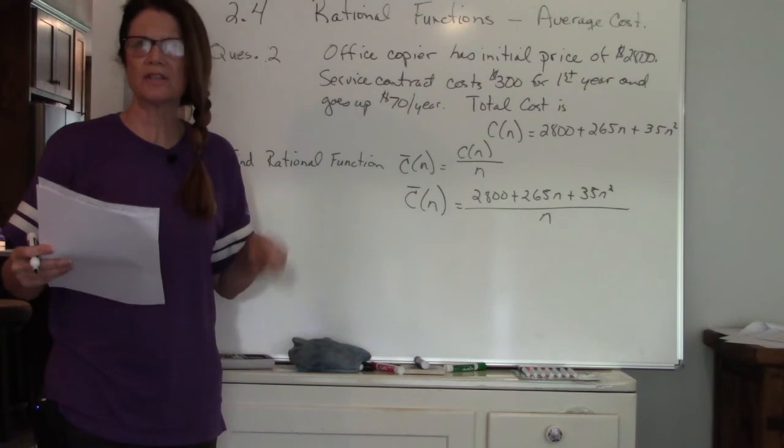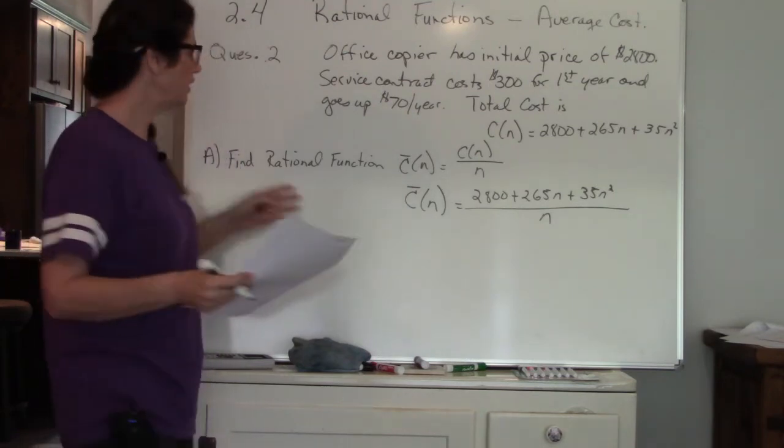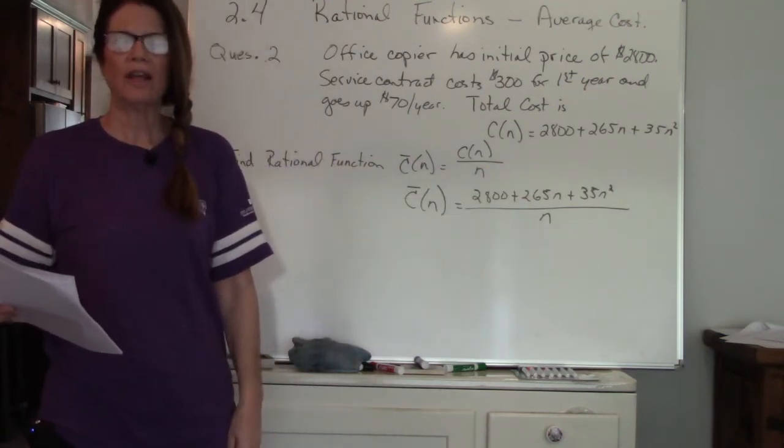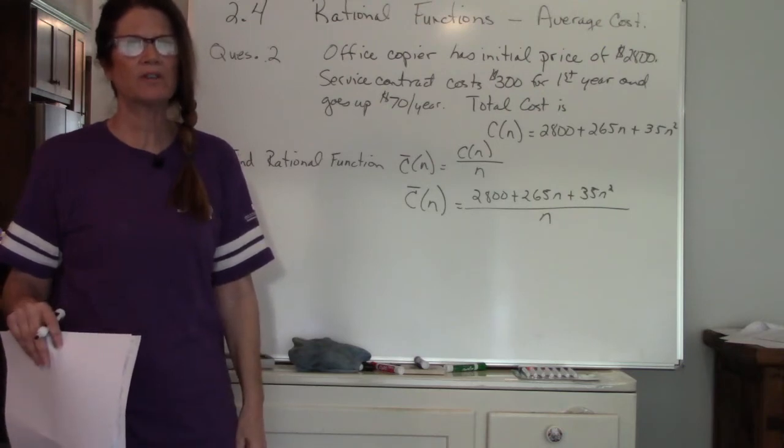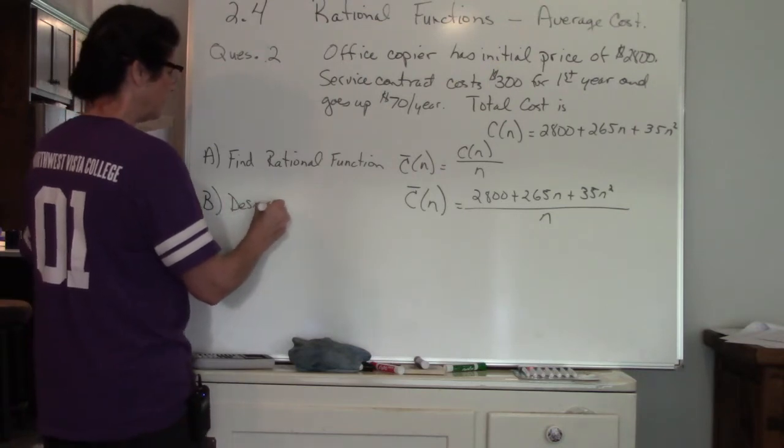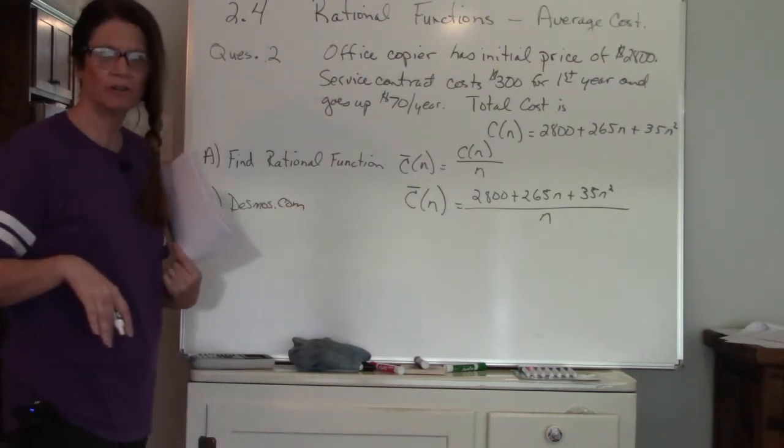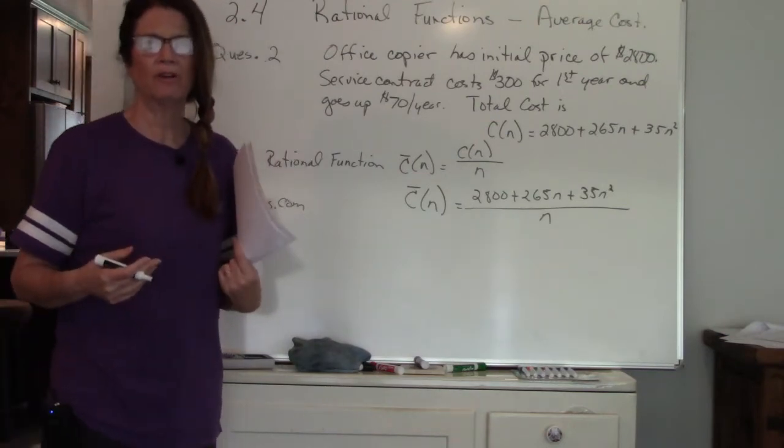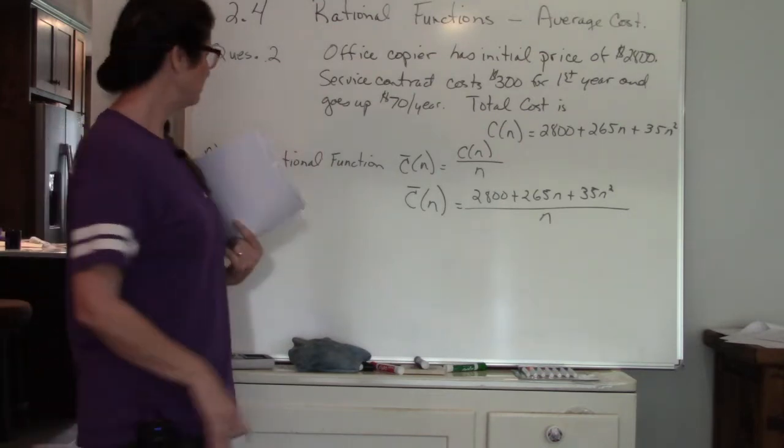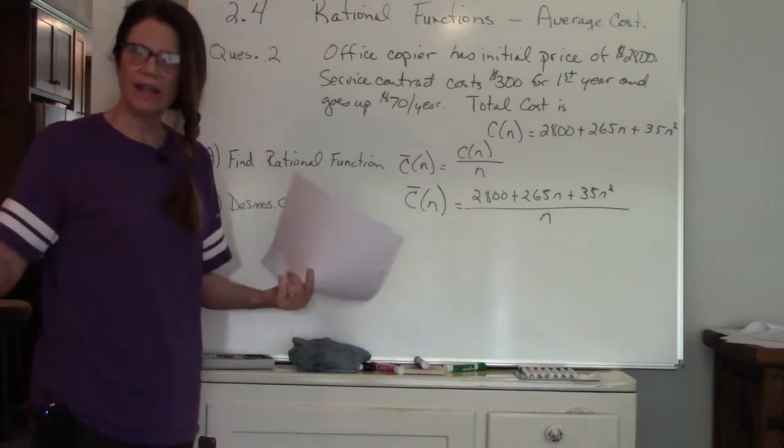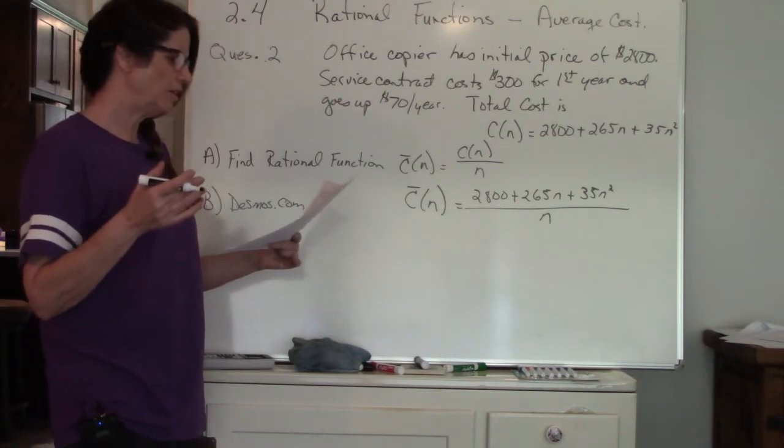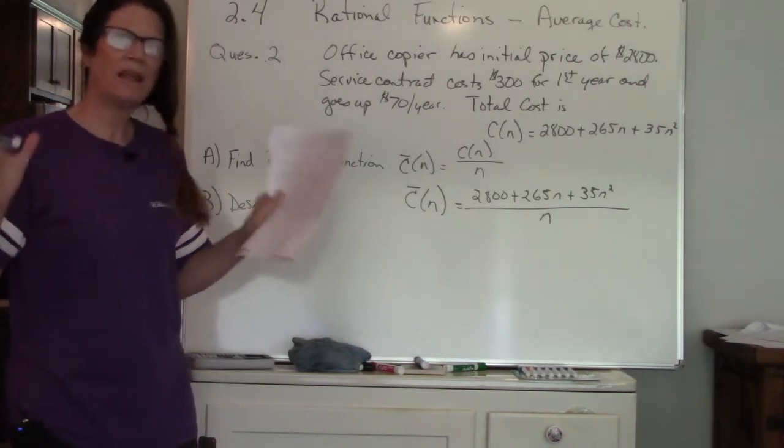Part B asks you to sketch the function. We're still dealing with a rational expression. For B you can use Desmos.com. It's a very easy application, you can have it on your phone, it's a great little app, or you can use it on the computer. If you don't have Desmos just use a table of values.